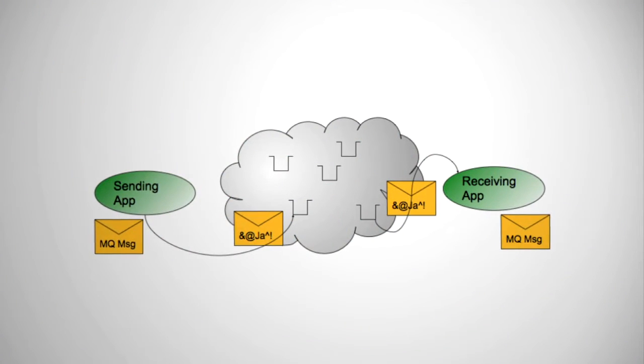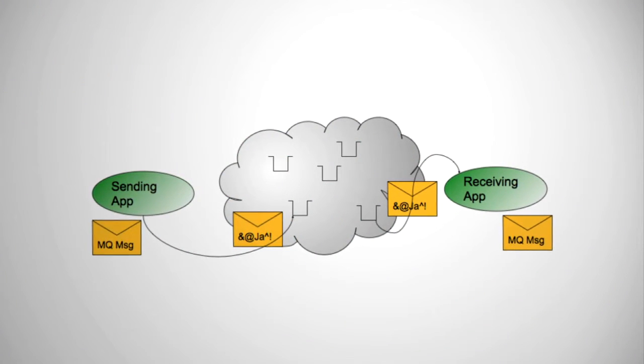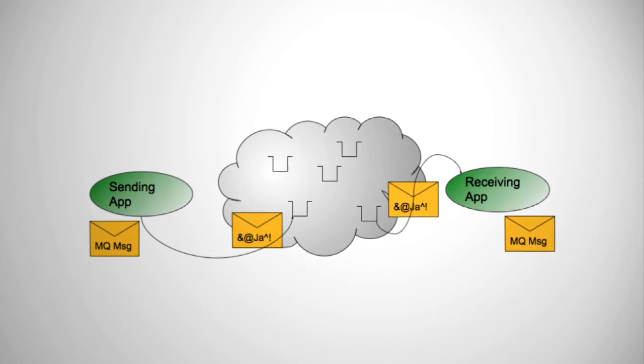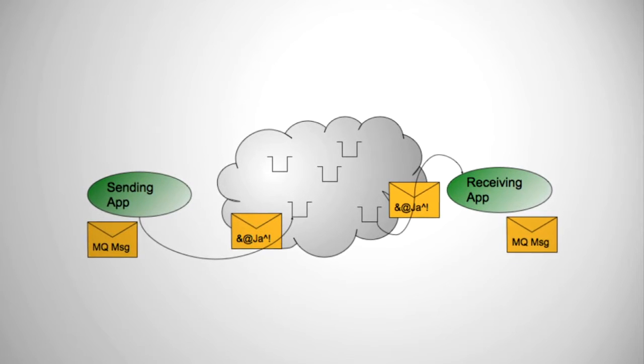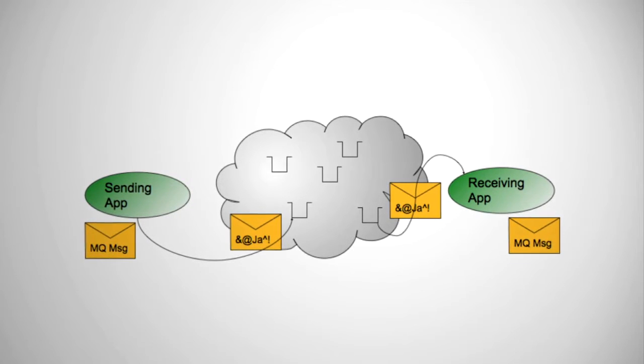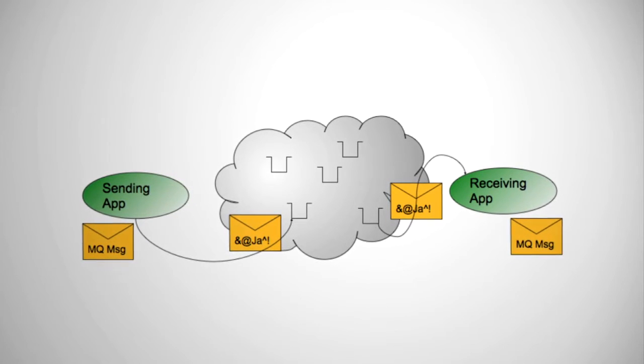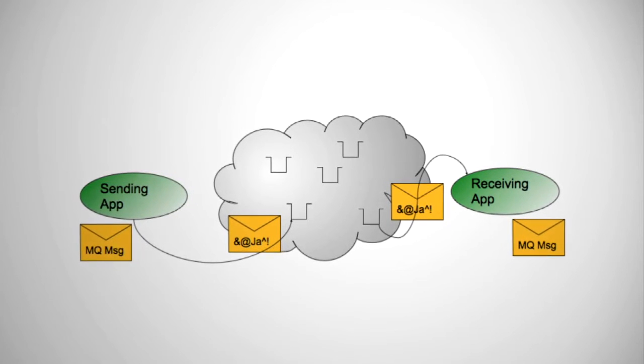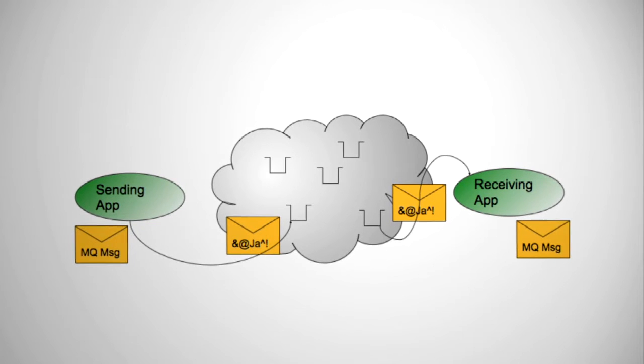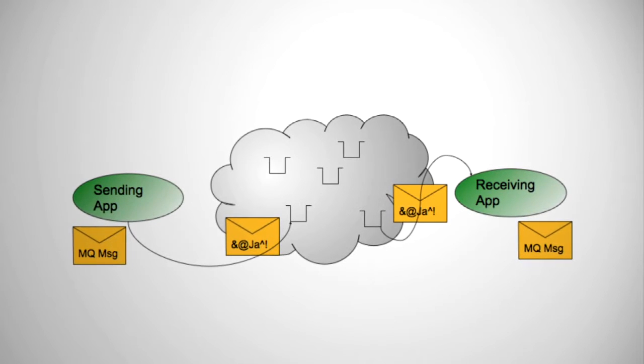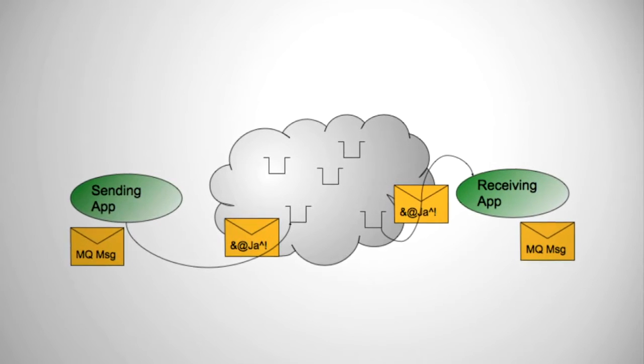WebSphere MQ AMS is a layer between the application and the WebSphere MQ API, transparently handling crypto functions as messages pass between the application and the queue manager. No code changes are required, making AMS compatible with most vendor applications.